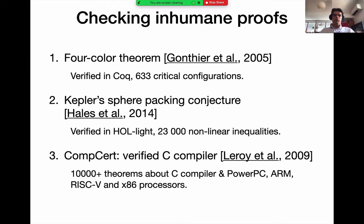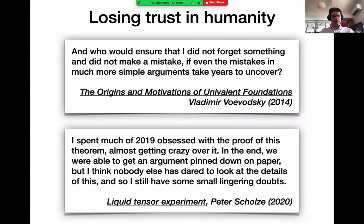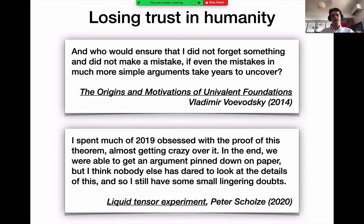There are also people who have simply lost trust in humanity. Vladimir Voevodsky in 2014, lamenting about how mistakes were found in some of his celebrated proofs years after they were published, said: 'And who would ensure that I did not forget something, and did not make a mistake, if even the mistakes in much more simple arguments take years to uncover?' For him, this was a turning point. He turned away from his Fields Medal work and devoted himself to finding a new way of doing mathematics, which he eventually found by creating a new foundation and using proof assistants.